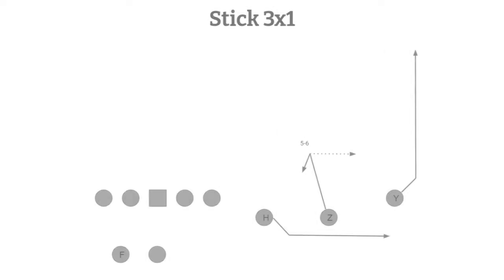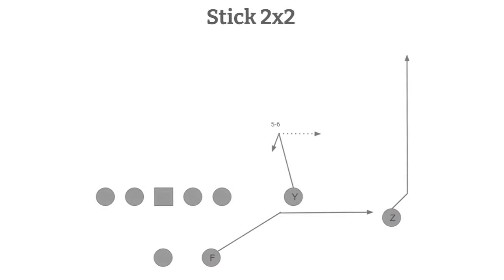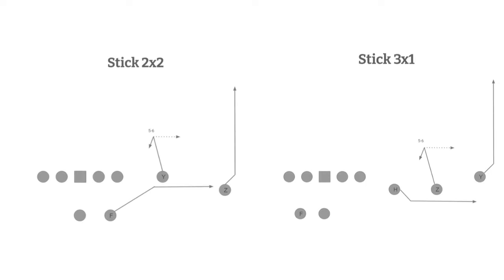The next passing concept is stick. Stick always consists of a curl route, a vertical route, and a flat route. The flat route can be run by a wide receiver or a running back out of the backfield. You can see it out of a two or three wide receiver set, but the premise is the same: you always have that curl route and vertical route, underlined by the flat route.